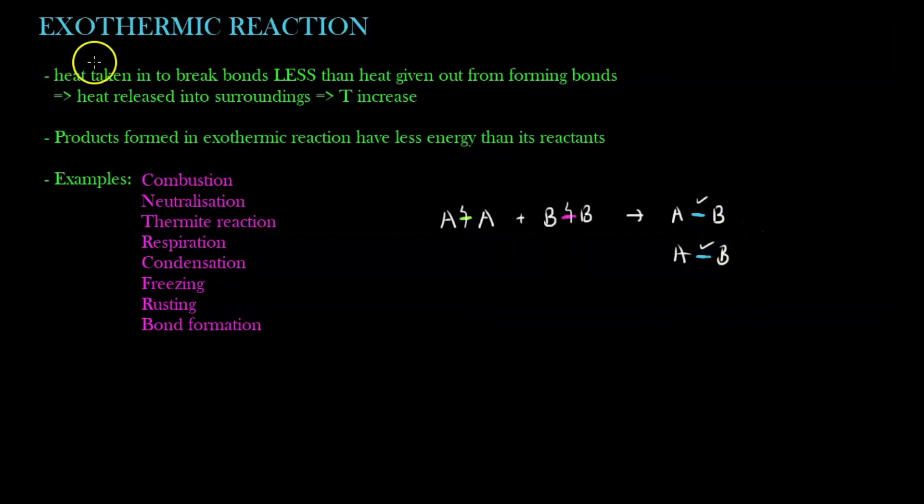And in the case of exothermic reaction, what do I mean? It's basically heat taken in to break bonds, these two bonds. For example, let's say when you add up the values, it's around 400 kJ per mole. Heat taken in to break bonds less than the heat given out to form bonds. This is the definition of exothermic reaction. So for example, if here is 400 kJ per mole, here can be 500 kJ per mole.